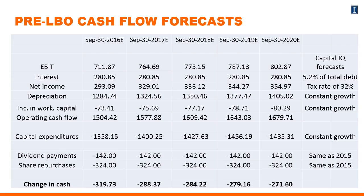What we're going to do is build cash flow forecasts using this data — a standard financial planning model similar to those from Corporate Finance I. We'll forecast the company's profits and interest payments using data prior to the LBO, producing what we call the pre-LBO cash flow forecast. The interest payment is 5% of the debt ADT had prior to the LBO. Forecasts for profits and EBIT come from Capital IQ; other forecasts — such as capital expenditures growing at a constant rate and dividends and share repurchase held at 2015 levels — are modeled assumptions.